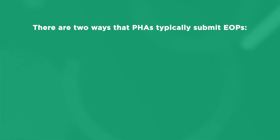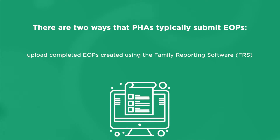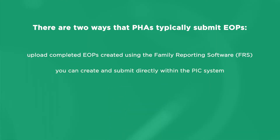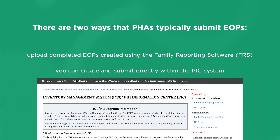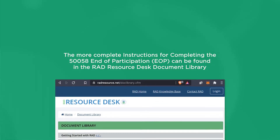This form must be effective before the last day of the month. There are two ways that PHAs typically submit EOPs: you can upload completed EOPs created using the Family Reporting Software, or FRS, or other PHA business software directly to PIC; or you can create and submit directly within the PIC system. More complete instructions for completing the 50058 End of Participation EOP can be found in the RAD Resource Desk Document Library.